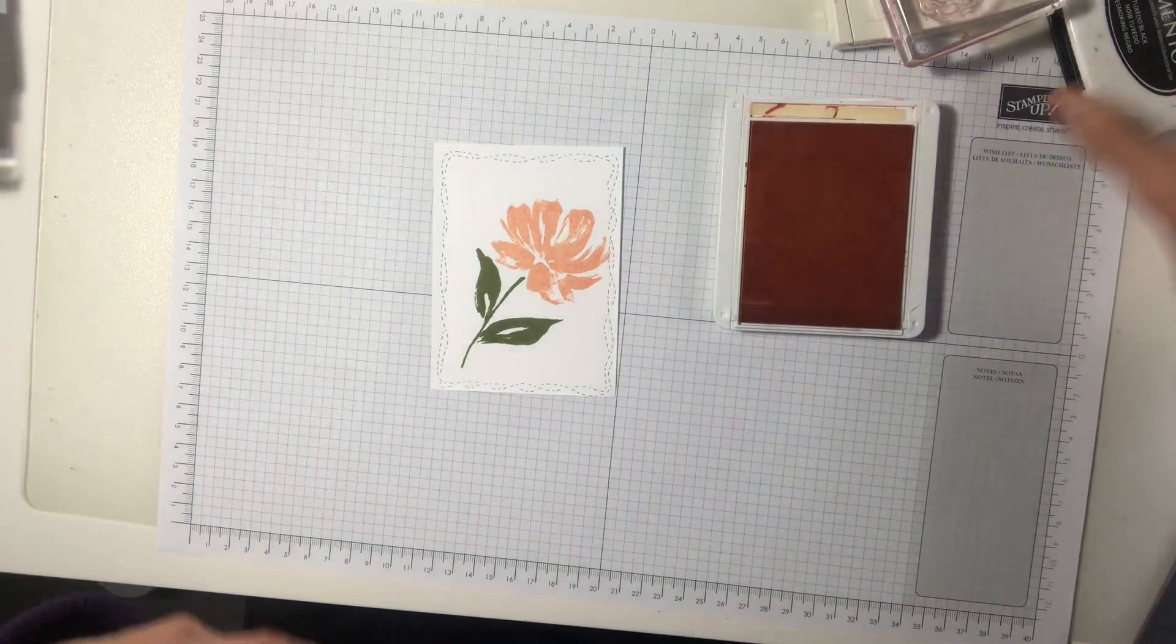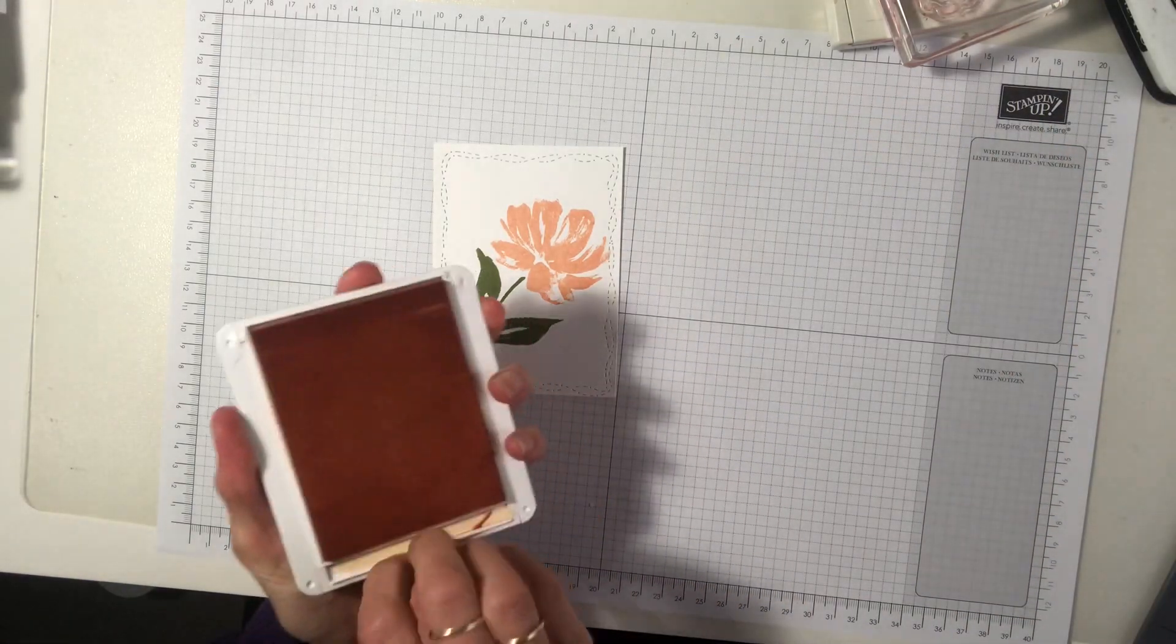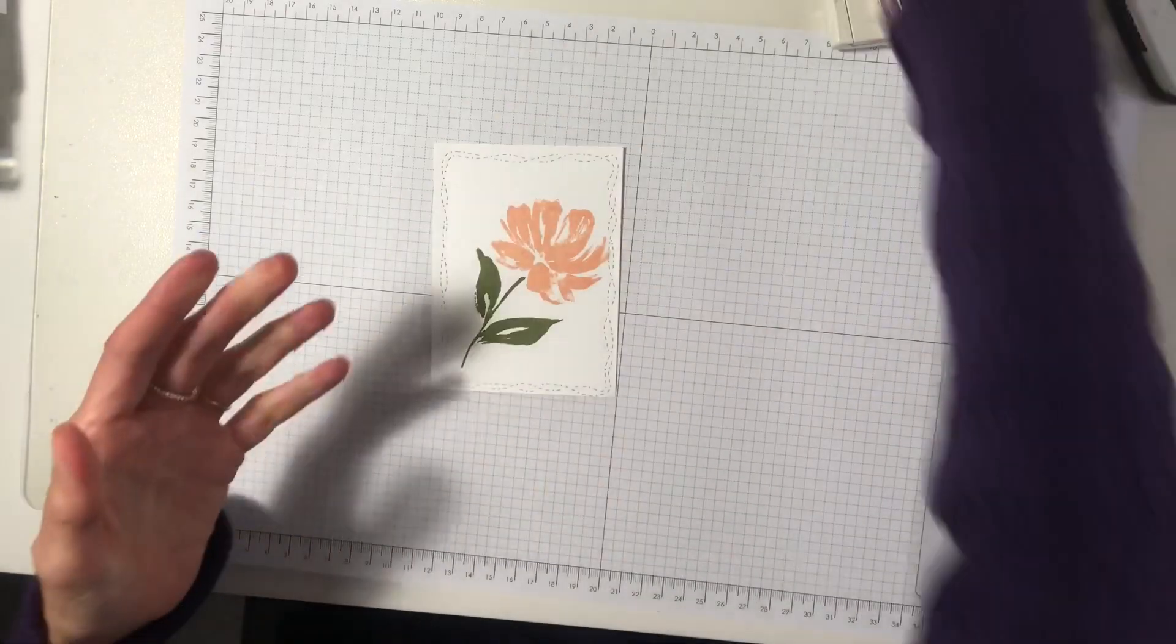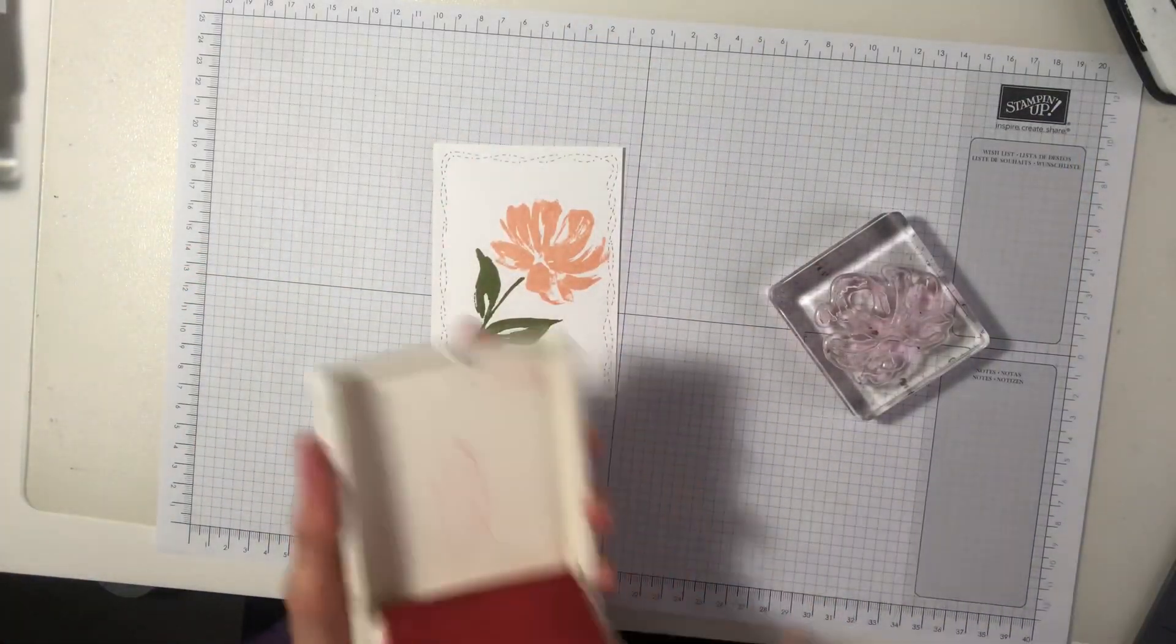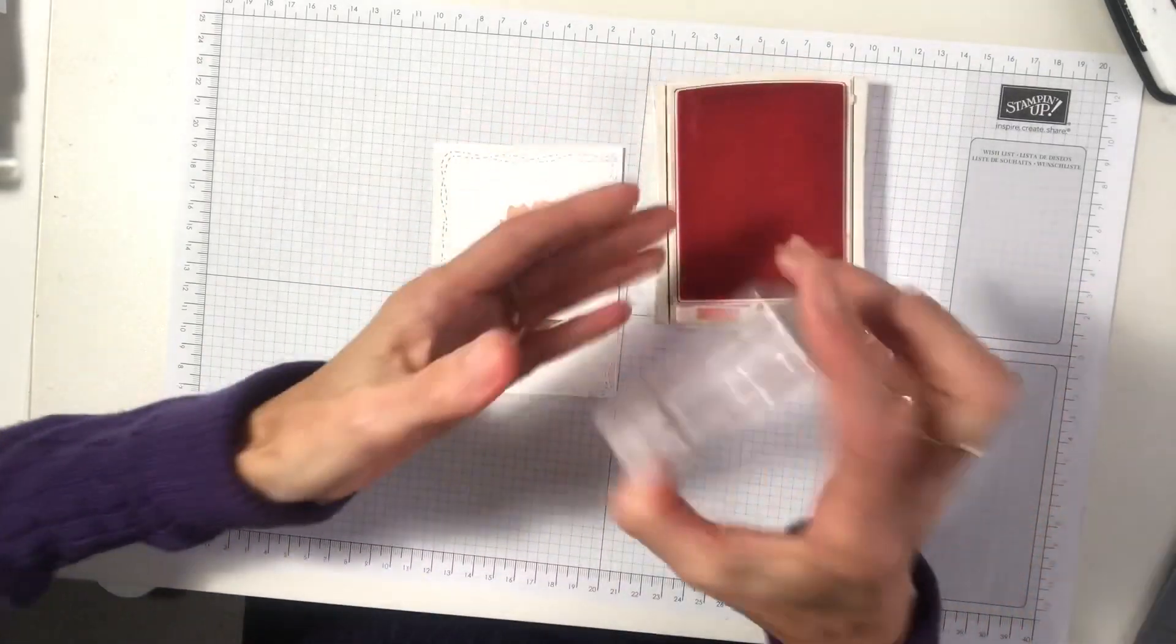Alright, so we're going to use the Flirty Flamingo to add some dimension on that with our second part of that stamp. Ink that up.